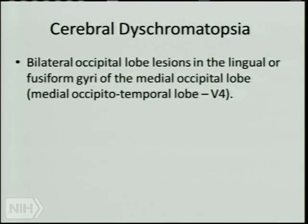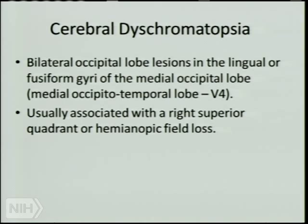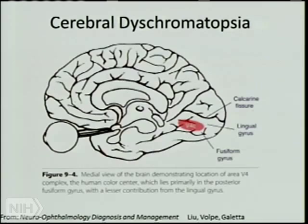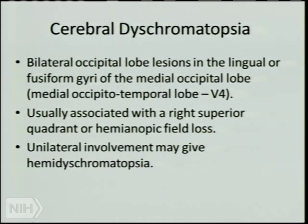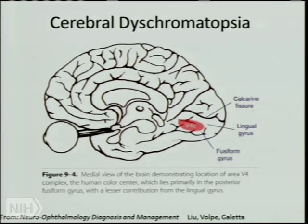Cerebral dyschromatopsia involves usually bilateral occipital lobe lesions in the fusiform gyrus area. Patients often have a superior quadrant or hemianopic field loss. With bilateral involvement, they complain the world looks washed out or like a black-and-white photograph, and they're really bothered by it. With unilateral involvement it's called hemidyschromatopsia. This involves area V4.